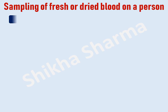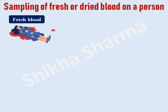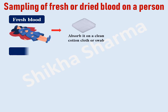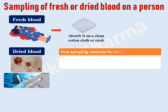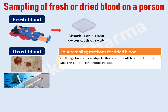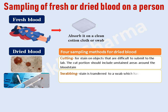The second condition or source will be the collection of fresh or dried blood on a person. If there is fresh blood, absorb it on a clean cotton cloth or swab. If the blood is clotting or has dried, use distilled water to moisten a cotton cloth or swab and then absorb the blood with the moist surface. Leave a portion of the cloth or swab unstained as a control or blank sample. Regarding dried blood, four sampling methods are used.